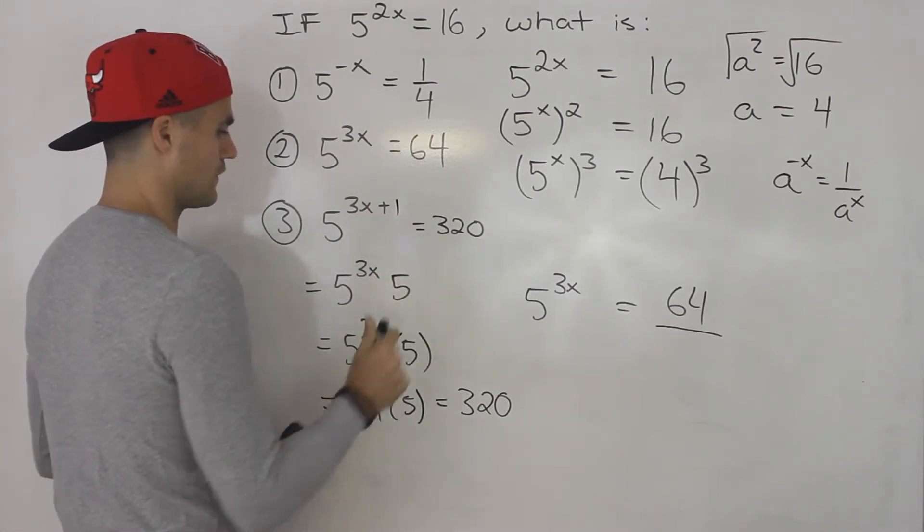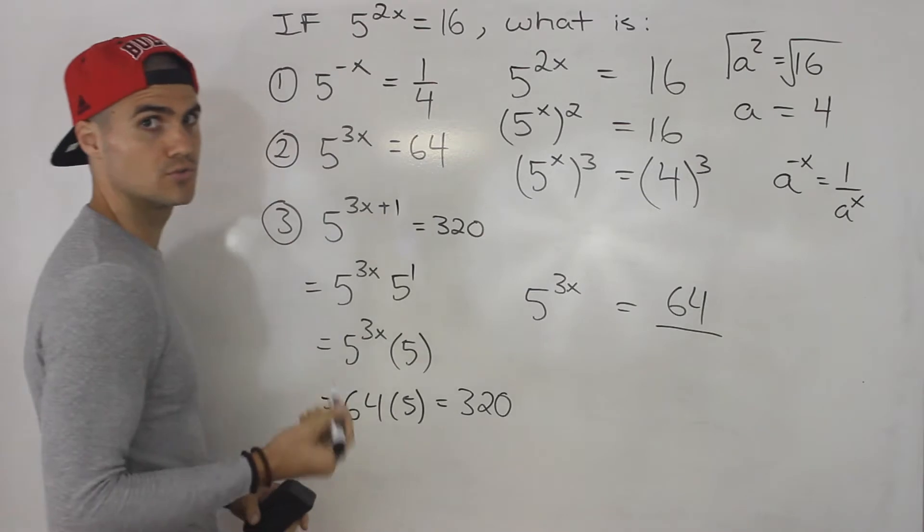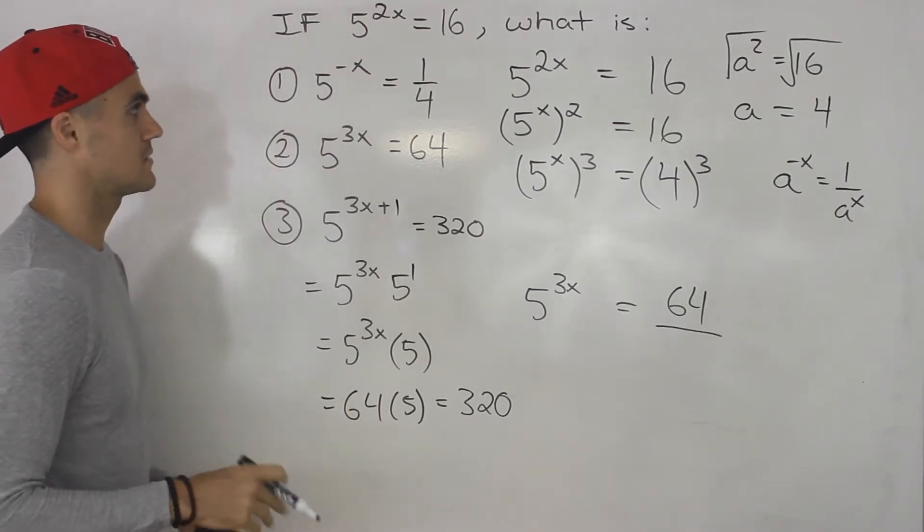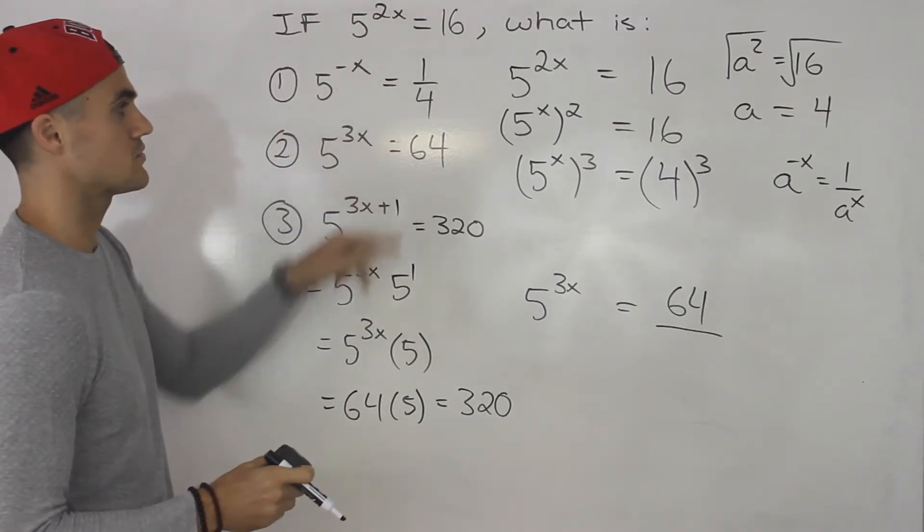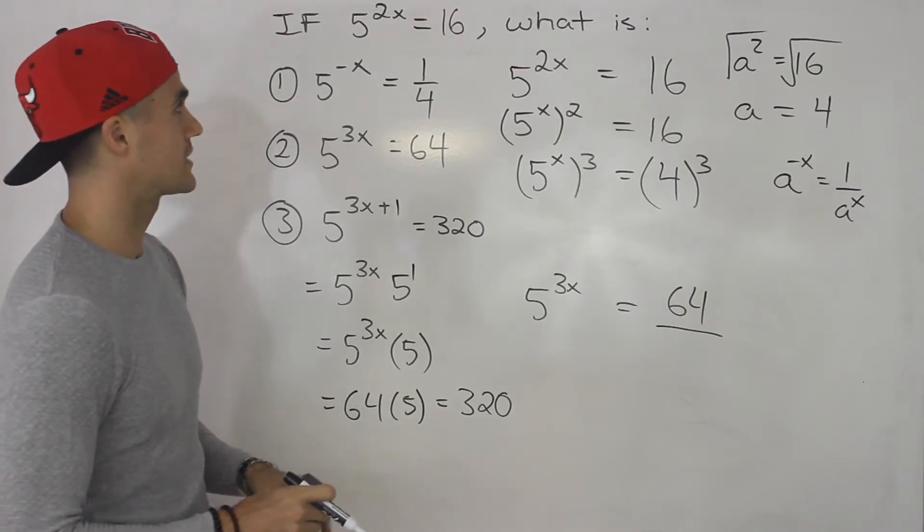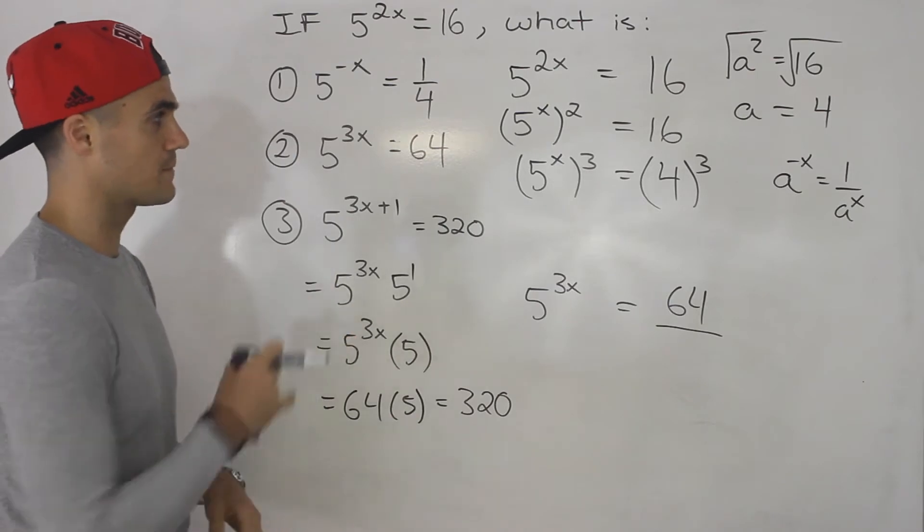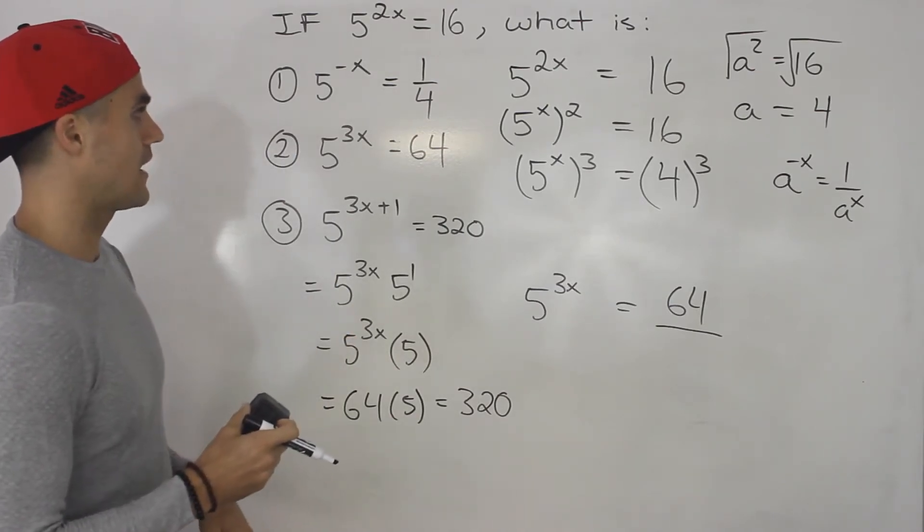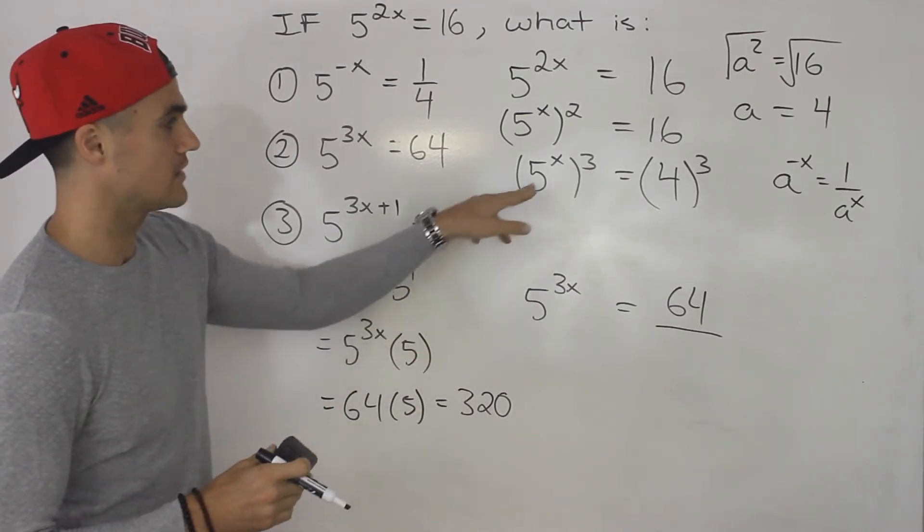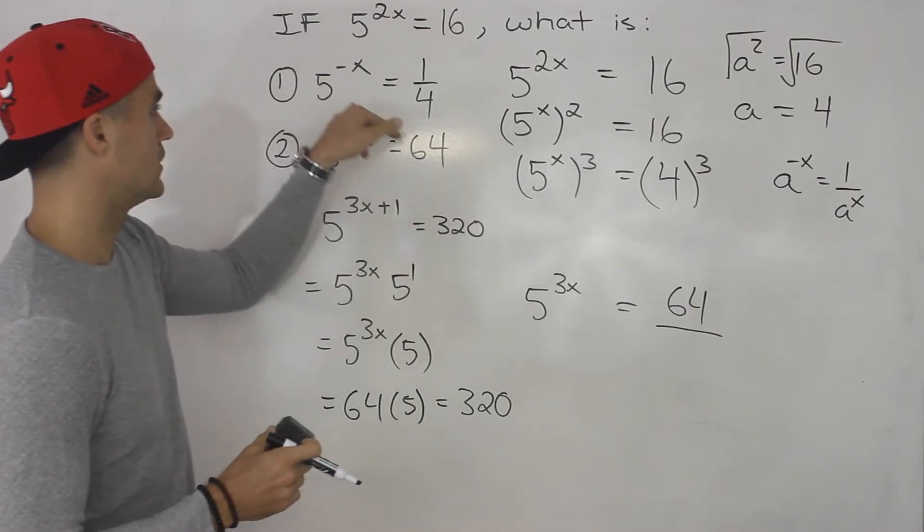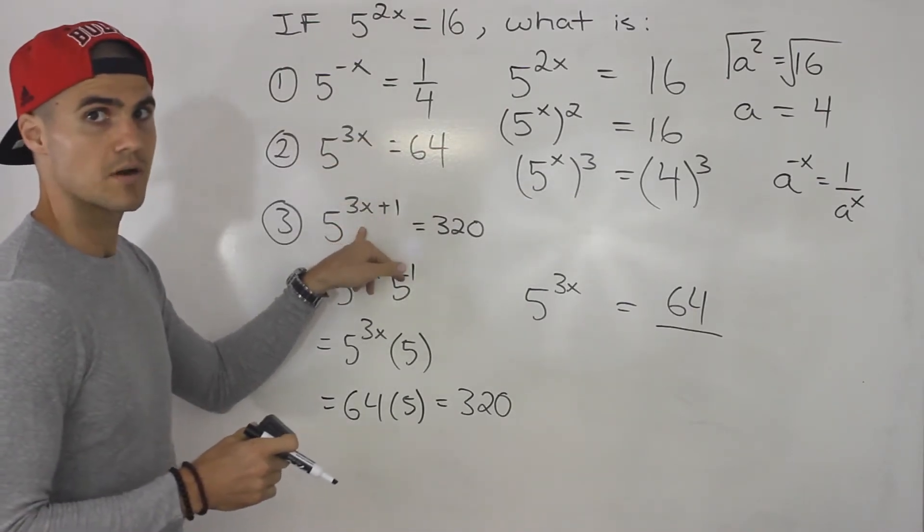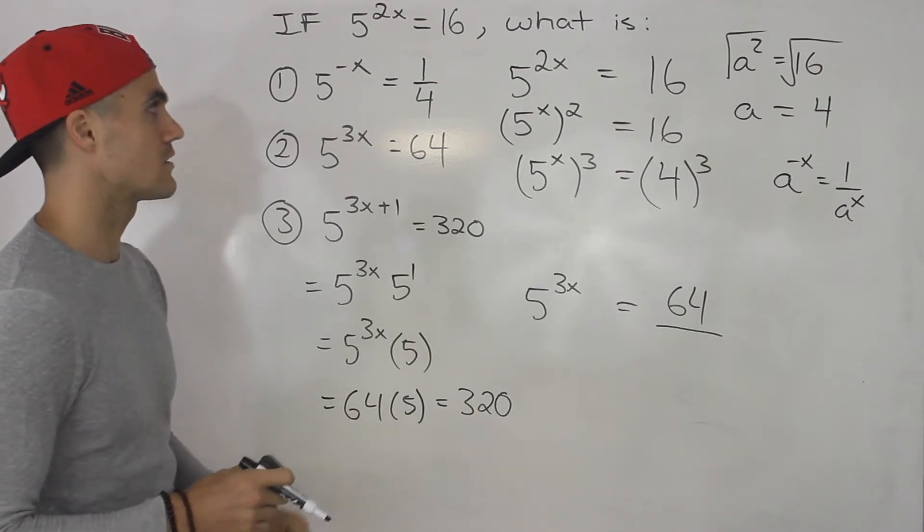All right, so fairly tricky question, fairly unique question, but you may see it come up. But these are the answers right here. So basically what you want to do is you want to get an expression for just 5 to the x, which we know is equal to 4 in this case. And then you want to figure out how do you get from 5 to the x equals 4 to each of these expressions. And what you do to one side, you got to do to the other.